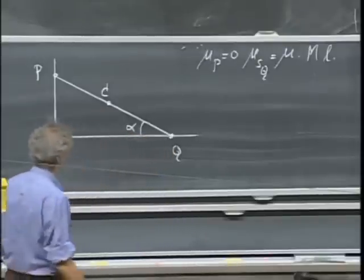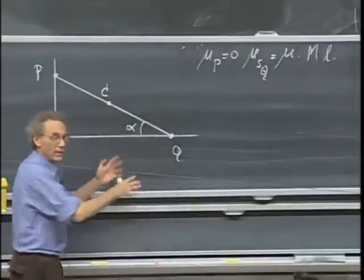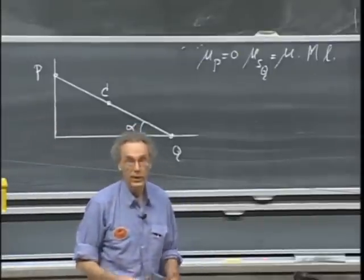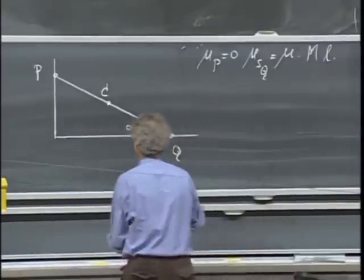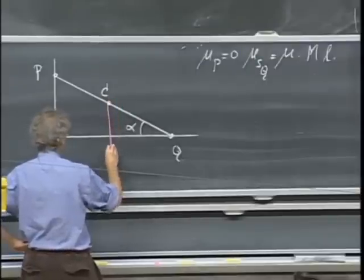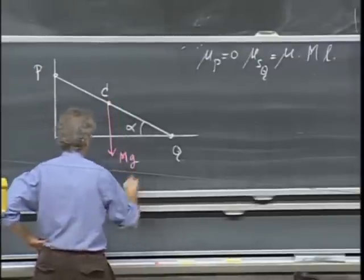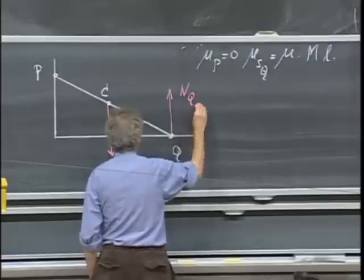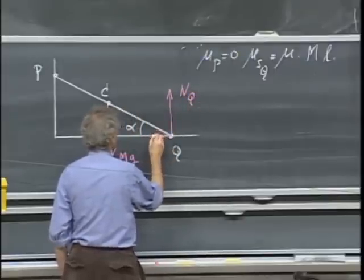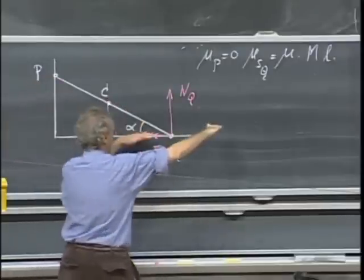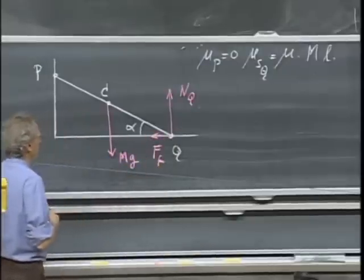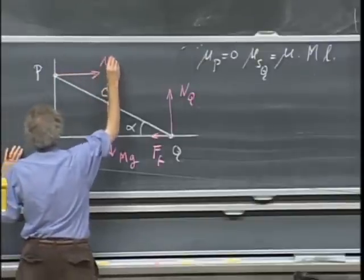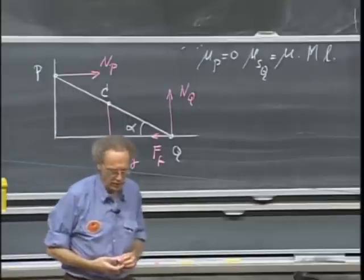We know from experience that if the angle alpha is too small, the letter will slide. So I want to find what angle alpha should be so that it does not slide. The forces acting are: gravity mg downward, normal force N_Q at point Q, friction at Q directed to prevent sliding, and at point P — where there is no friction — only a normal force N_P.